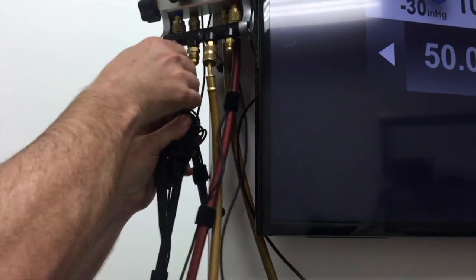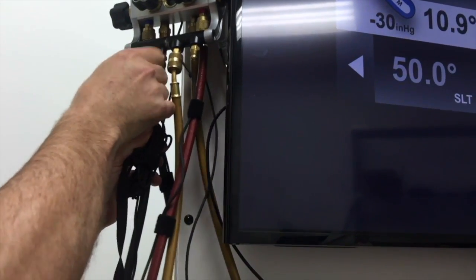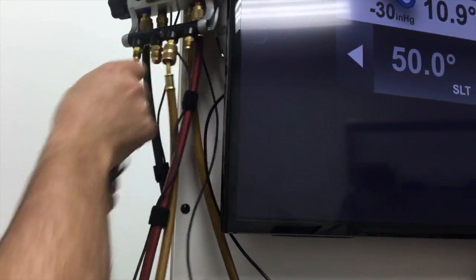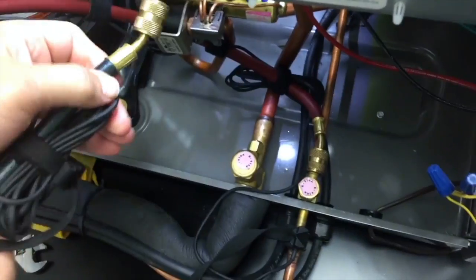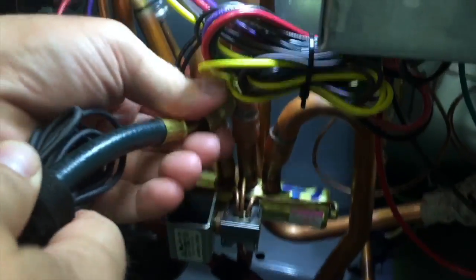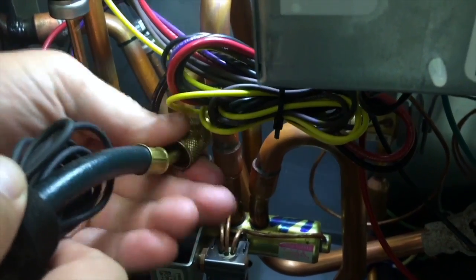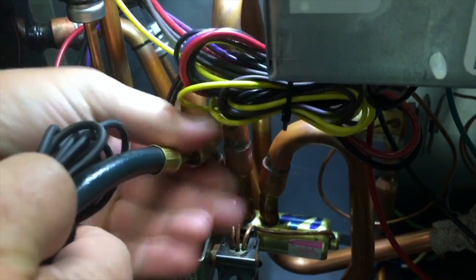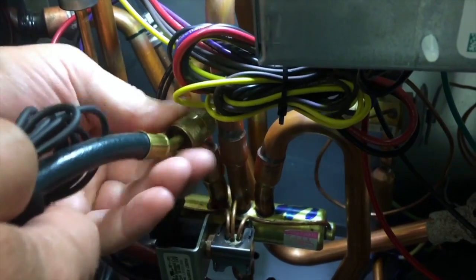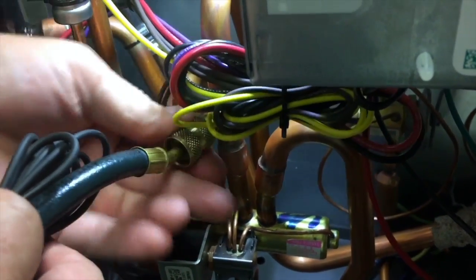And then I'm going to hook up my low side. Now you'll notice that I put my hoses on the hose park tight, and you do that for a reason. The reason you hook up tight to your hose parks is to make sure you don't get any moisture in your refrigerant hose.